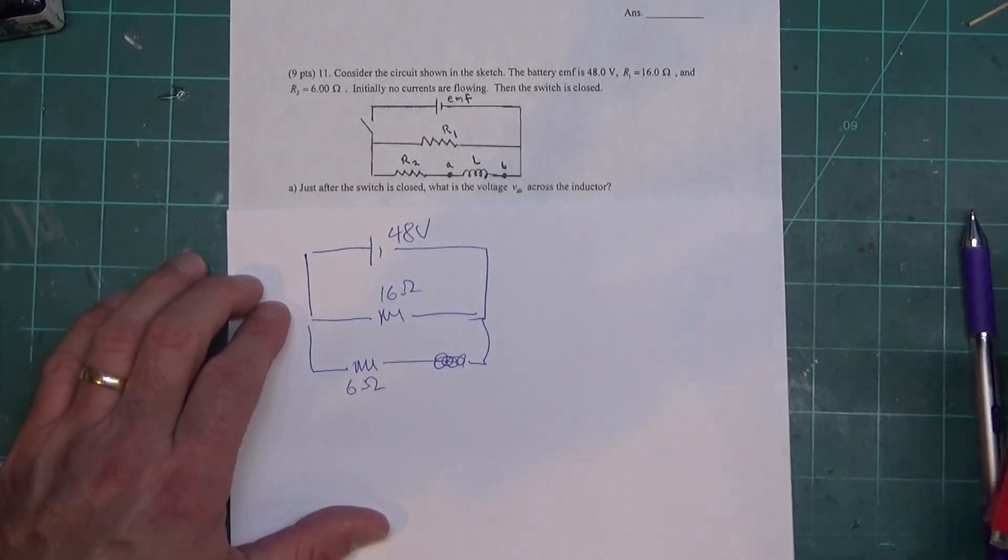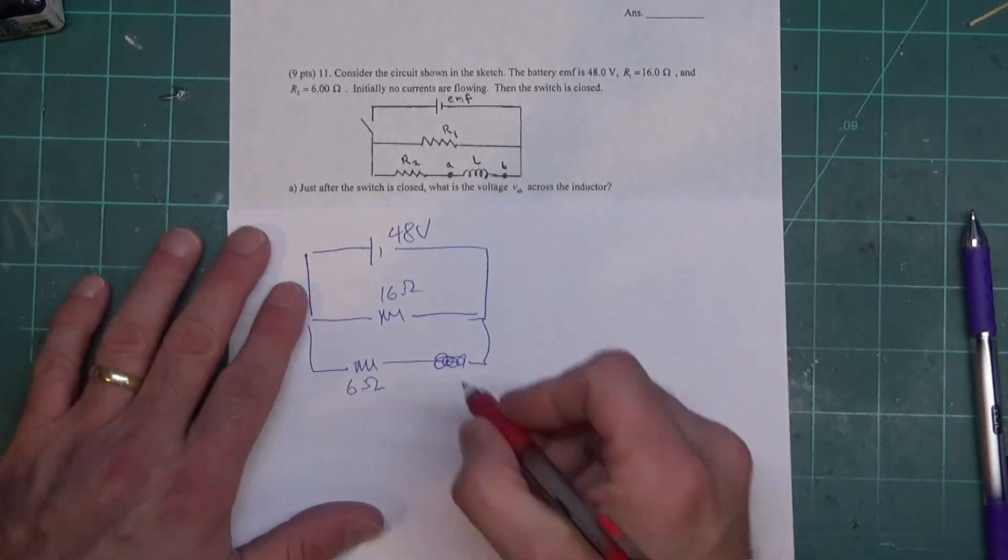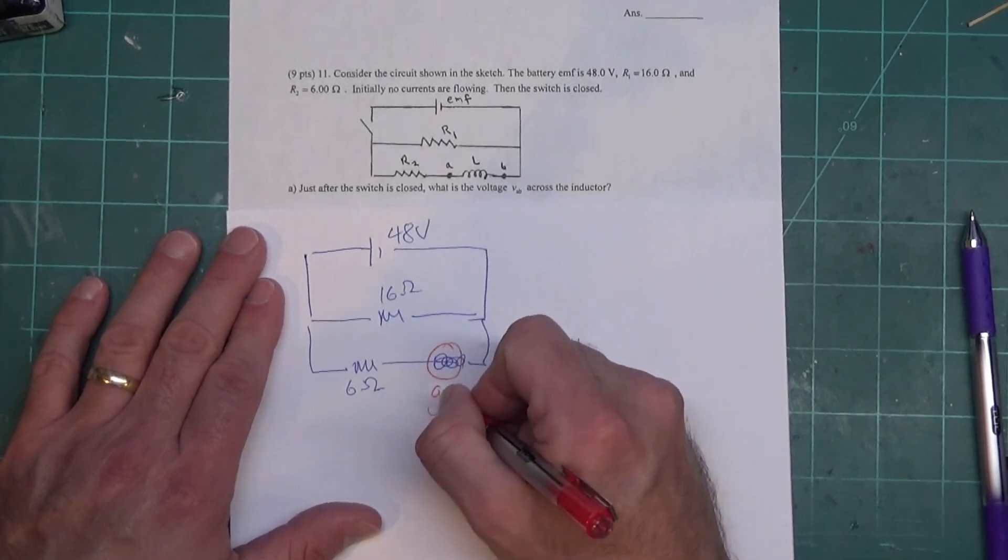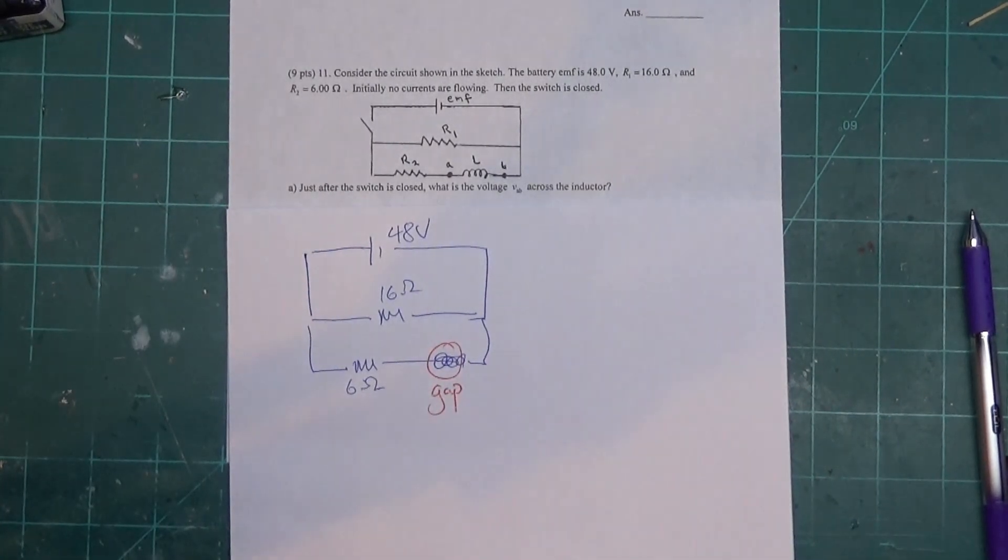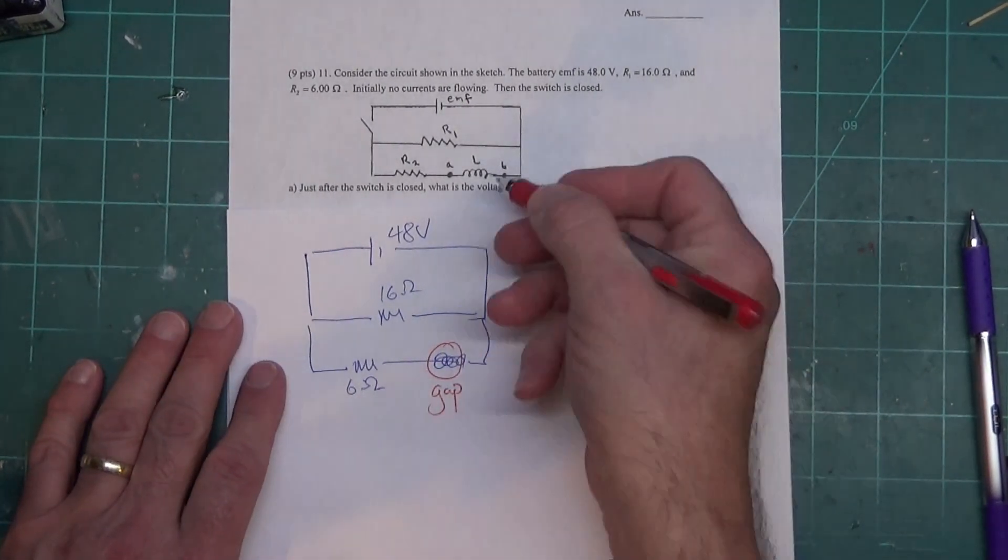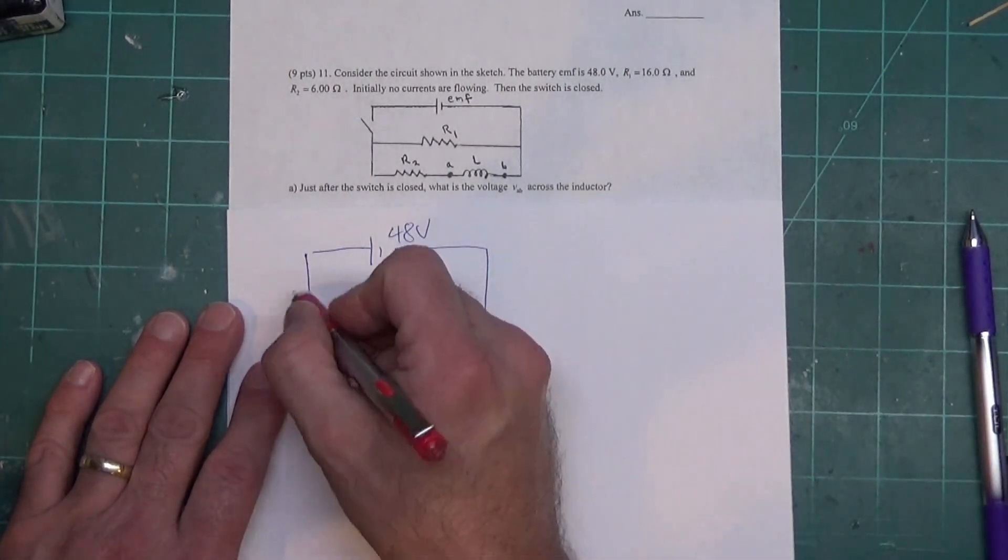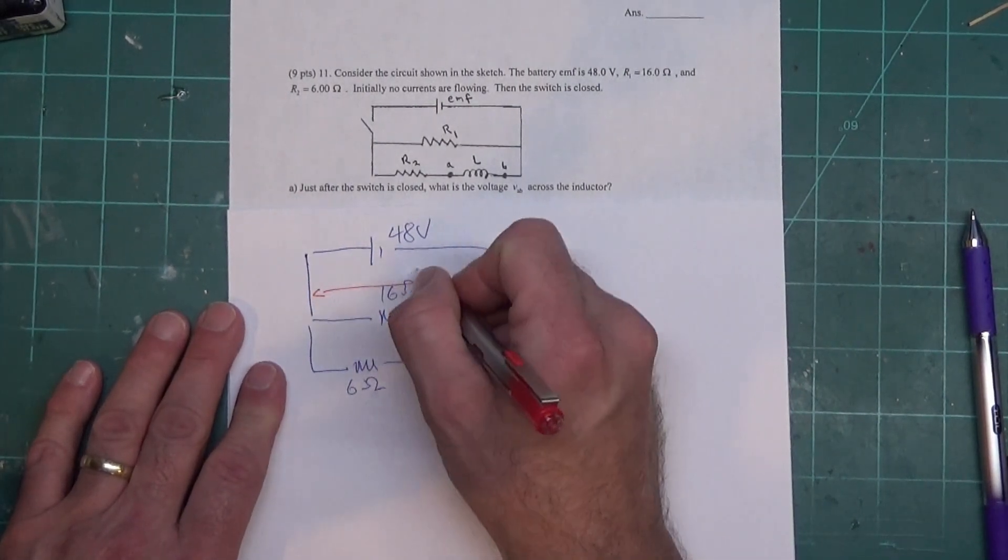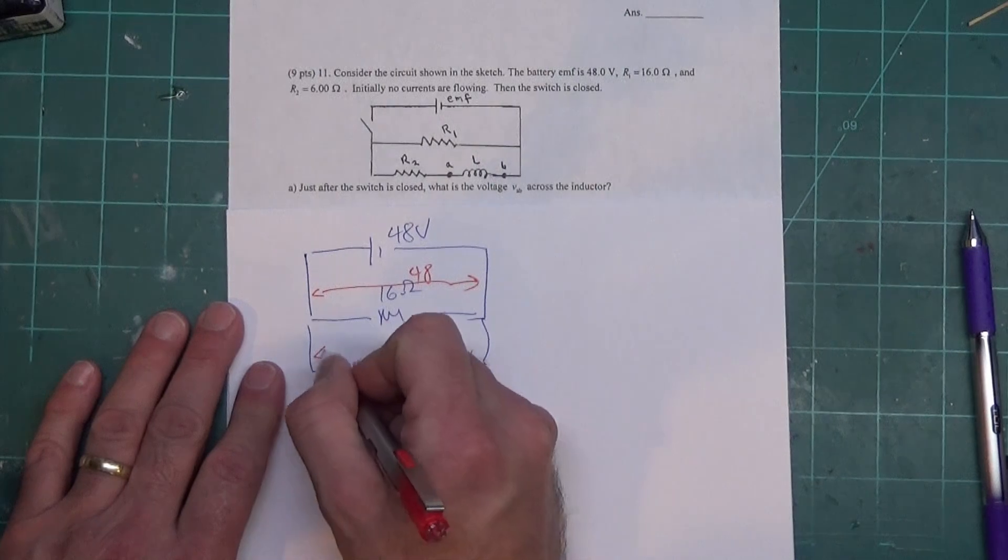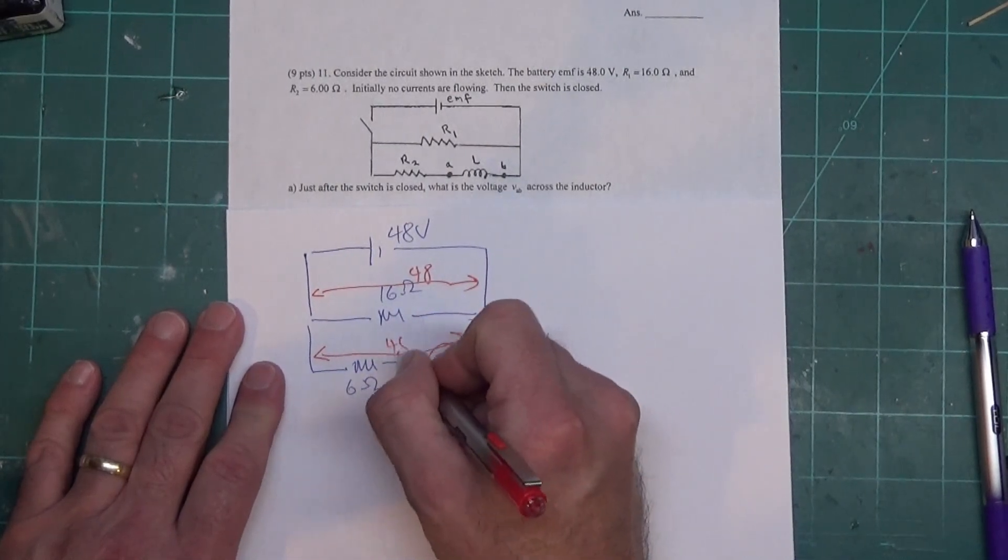When the switch is closed we have current flowing through the circuit, but right when it's first closed, this right here is acting like a gap so might as well not be there. Now the problem's asking about voltage. Since everything's in parallel, all the voltages are the same, so there's 48 volts across there and 48 volts across there.